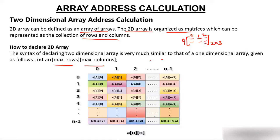Looking at the picture, you have an N×N matrix. The starting row will be zero and the last row will be N minus one. The starting column will be zero and the last column will be N minus one. The first element is a[0][0], then a[0][1], a[0][2], up to a[0][N-1], and similarly for the last row a[N-1][N-1].